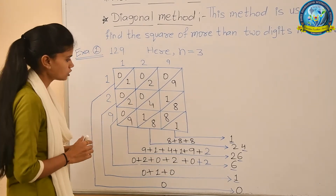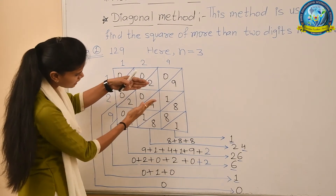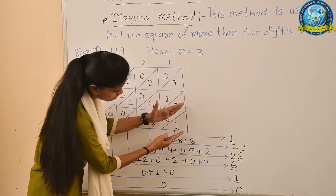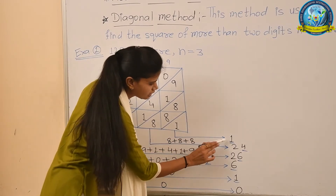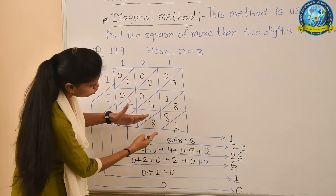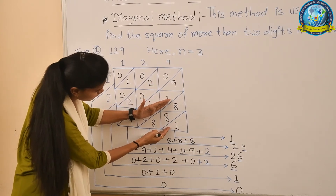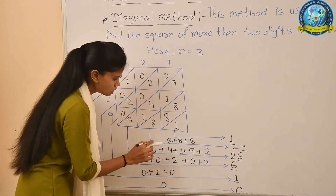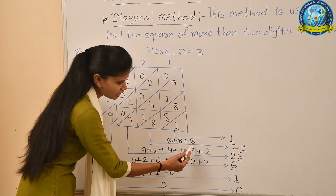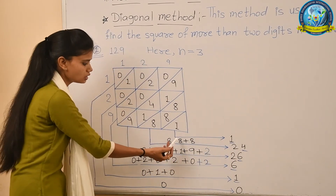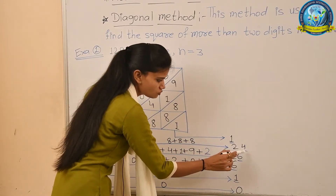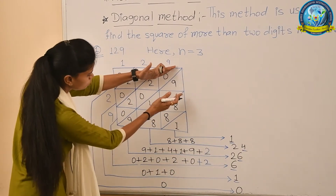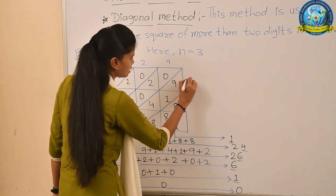Now we find the square using the diagonal lines. We add the values along each diagonal area. The first part has only 1, so we write 1. For the next diagonal area, we see three 8s: 8+8+8=24. We underline 4 (the ones digit) and carry forward 2 to the next column.